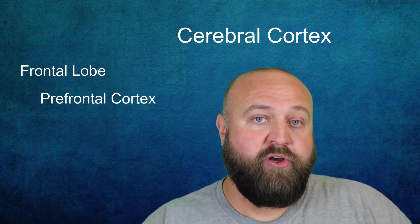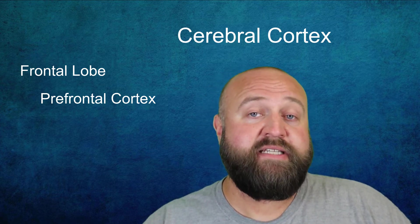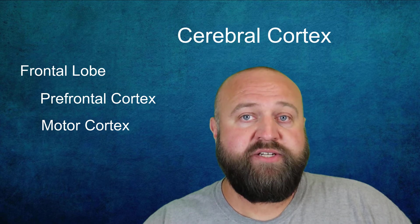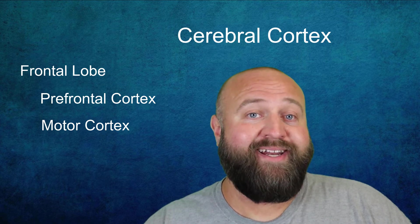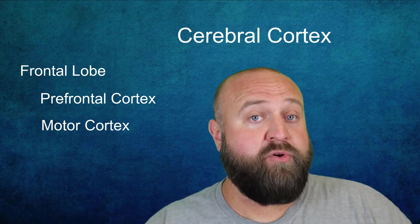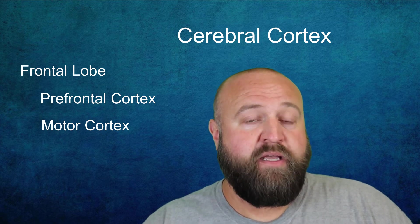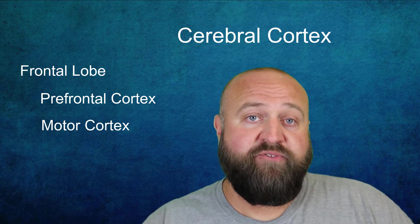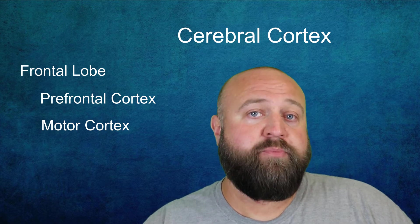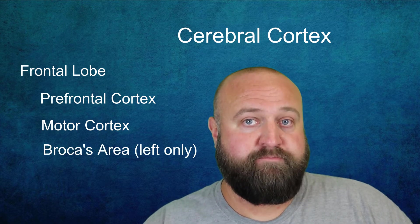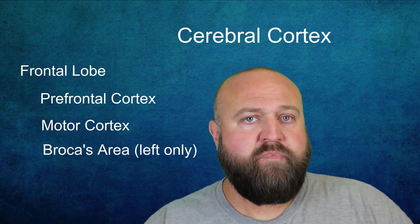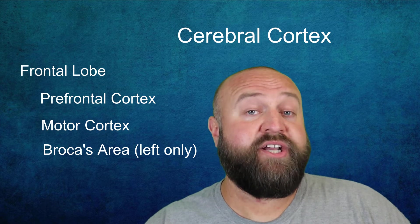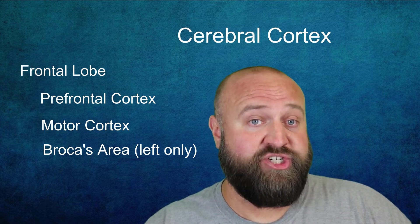The frontal lobe also contains the motor cortex, which plays a role in planning and coordinating movement. Also located in the frontal lobe — specifically in the left frontal lobe — is Broca's area, which plays an important role in the production of speech.